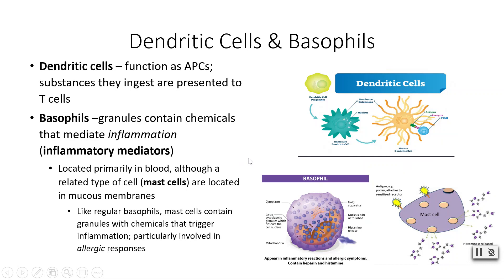Dendritic cells function as antigen presenting cells — APCs. In the picture we have a mature dendritic cell that has obtained a green antigen, perhaps from a bacteria encountered at some point, and it is presenting that antigen to a T cell. Now this T cell knows that if it comes across this green antigen on a cell somewhere in the body, that cell is probably a foreign invader and the T cell knows to attack wherever it finds that antigen.